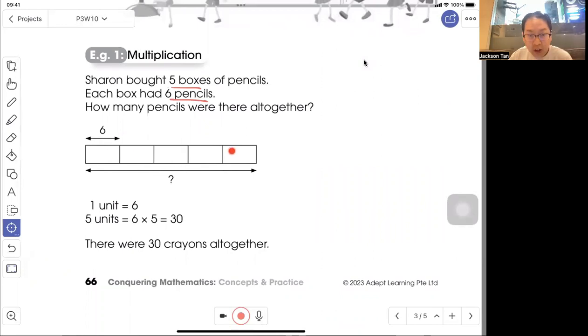So you have one, two, three, four, five, five boxes. One box six, question mark. So one unit is six. Five units will be six times five, thirty. There were thirty pencils altogether.